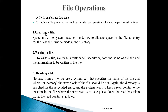The first file operation is creation of a file — space must be available in the file system, and then an entry is created for the file in the directory. The second operation is writing a file: the user makes use of the write system call, specifying the file name and what information has to be written. The system searches the directory for the file's location, a write pointer is maintained pointing to where the next write should take place, and after writing, the write pointer is updated.